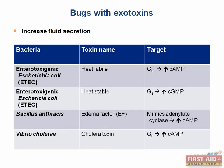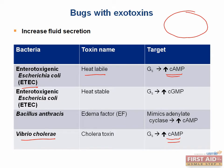Next, let's discuss toxins that increase fluid secretion. Two bugs work via the same mechanism: enterotoxigenic E. coli (ETEC) and Vibrio cholerae. The heat-labile toxin of ETEC and cholera toxin both activate stimulatory G protein, which activates adenylyl cyclase, increasing cyclic AMP production. This increases chloride secretion into the intestinal lumen, water follows, resulting in watery diarrhea.